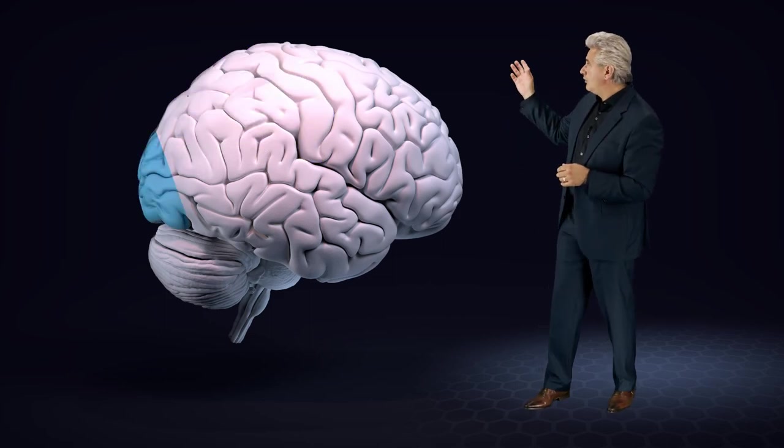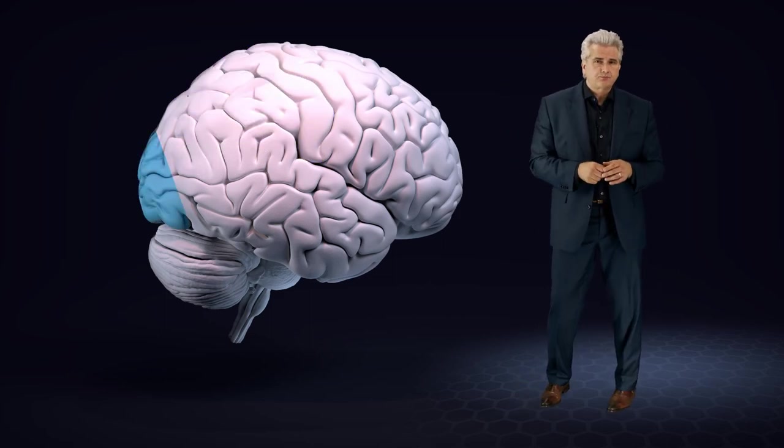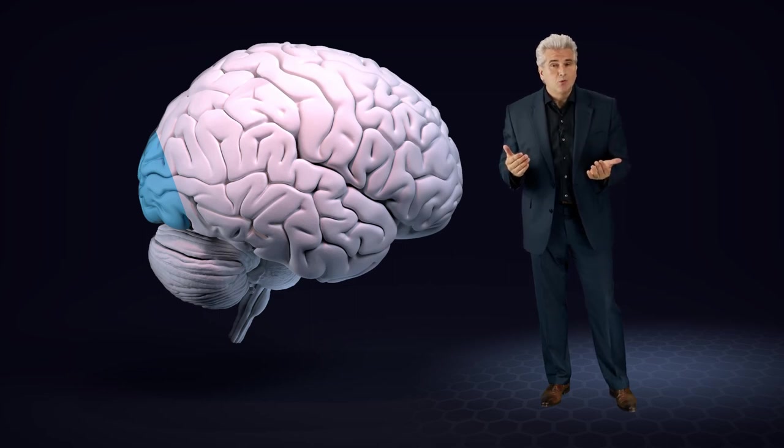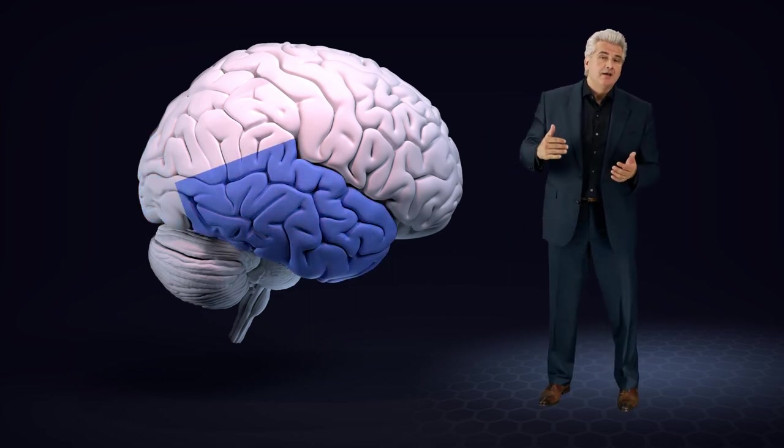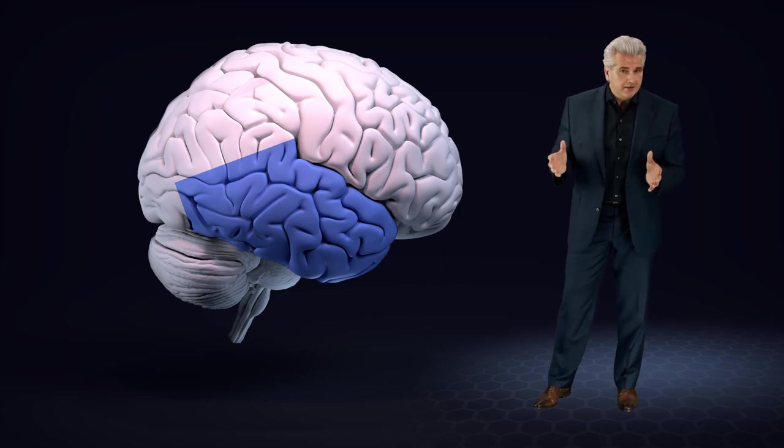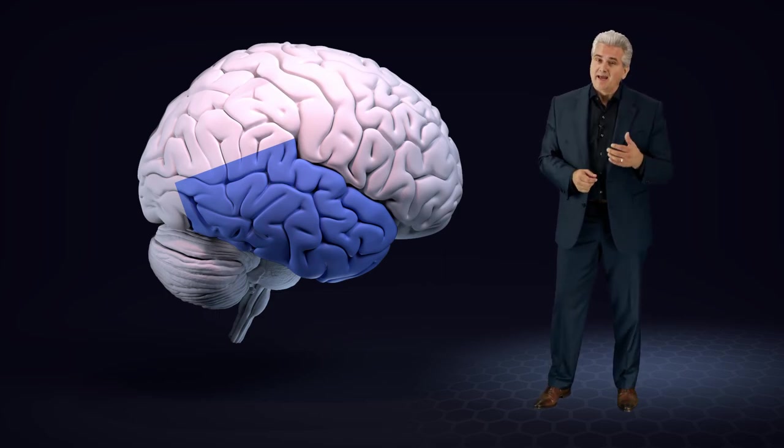The occipital lobe is involved with vision. The temporal lobe is involved with hearing, language and memory.